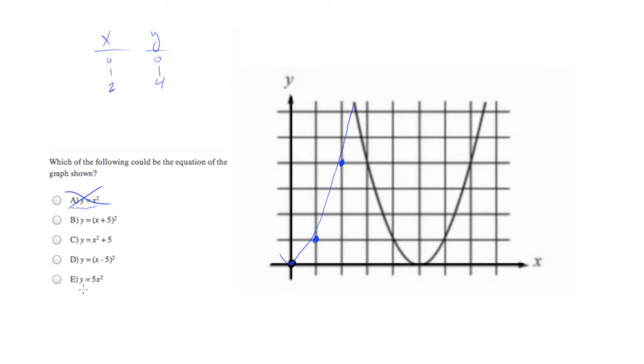So, for example, let's go down to answer choice E. If you take your original function, y equals x squared, and you multiply the whole thing by five, the effect that that has is making things steeper. So instead of going to the point one, one, now we're going to go to the point one, five. So this would be a really steep parabola. And it'll still have the point zero, zero. So that's not what we want either.